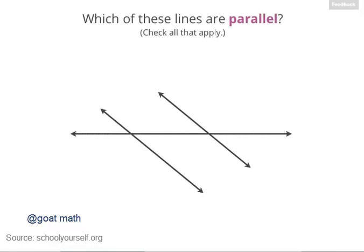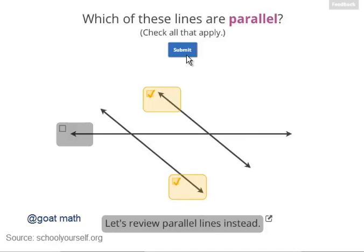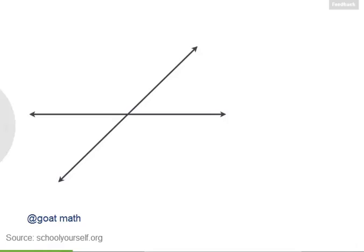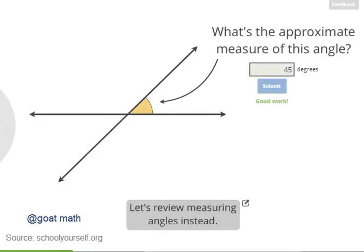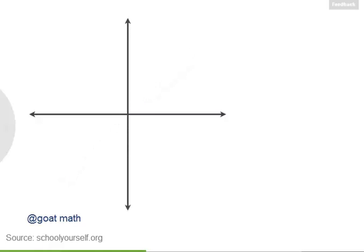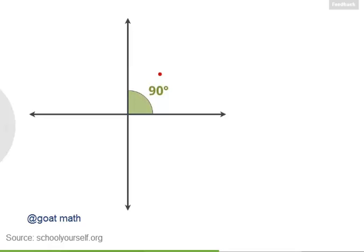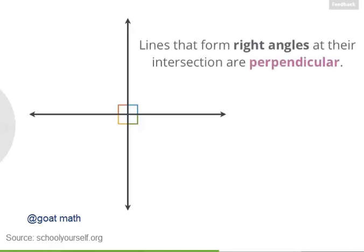Before we get into perpendicular lines, can you identify which of these lines are parallel? To review parallel lines, click down here. Exactly, these two lines are parallel, meaning they don't intersect. Lines that do intersect form angles at their intersection. So for example, here's one of the angles formed at this intersection. What's the approximate measure of this angle? Nicely done. Next, let's draw in another line. So what would you say is the measure of the angle at this intersection? Precisely, this is a 90 degree angle, which is also known as a right angle. And right angles are usually indicated by drawing a little square in the angle. If you look carefully at this intersection, you'll notice that all four angles here are right angles. Lines that form right angles at their intersection are said to be perpendicular to each other.